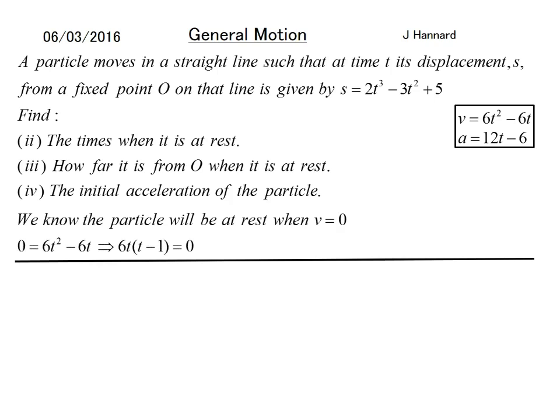We'll rearrange and get that. You can take 6t out because it's a common factor and say 6t = 0 or t - 1 = 0, so t must equal zero and one when the particle is at rest. Easy peasy.